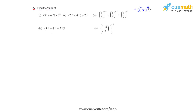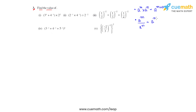We start with a raised to m times a raised to n — same bases in multiplication, so the powers get added and we write it as a raised to m plus n. Then we have a raised to m divided by a raised to n — same bases in division, so the powers get subtracted.